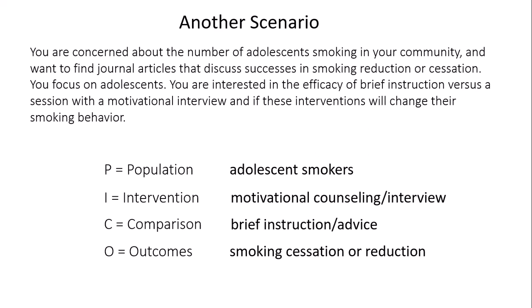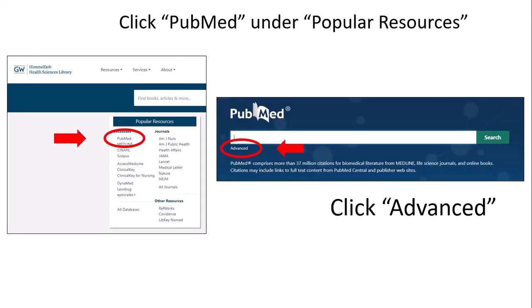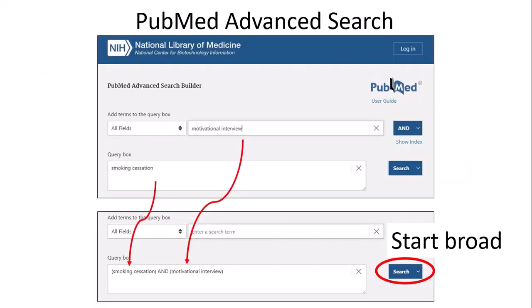Let's see how you might approach this on the library website. Under Popular Resources, click the link for PubMed. In the PubMed website, under the search box, click Advanced. The Advanced Search feature allows you to build up your search by adding search terms one by one. You might start by putting your O outcome, which is smoking cessation, in the search box. Then click AND or use the Enter key, which will move smoking cessation to the query box at the bottom.